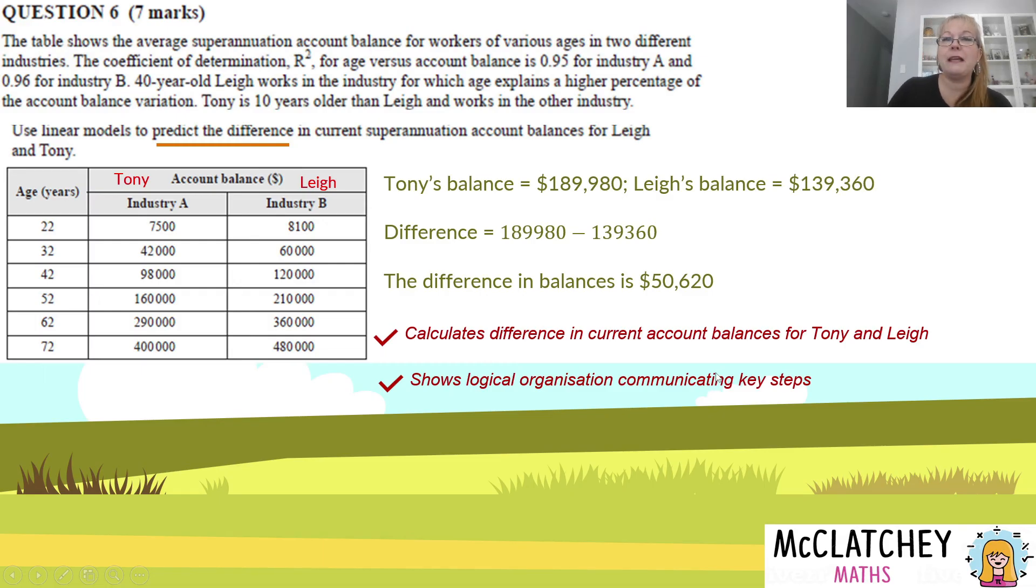There's also a seventh mark in this question for showing that logical organization, communicating those key steps. Things like using dollar signs, explaining what you're doing, labeling that one is Tony and one is Lee. You could have even labeled these with your coefficients of determination. You could have shown why you've made that decision. All of these steps, using your words to explain what you're doing as you're going, is all about communicating things in a clear way. It makes it so much easier for the marker to understand what you're doing.